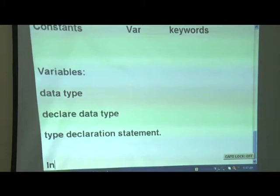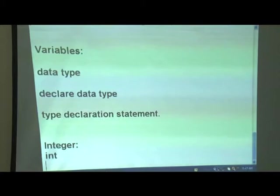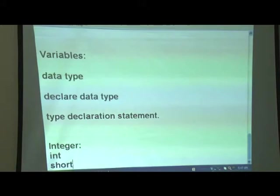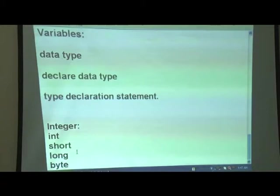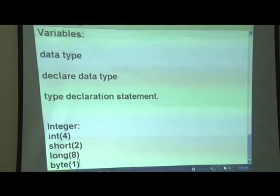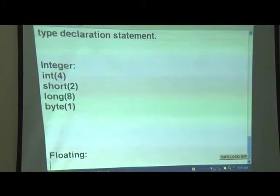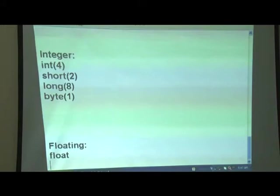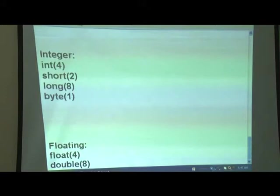The different data types in Java are: integer types — int (4 bytes), short (2 bytes), long (8 bytes), and byte (1 byte). Then floating point types — float (4 bytes) and double (8 bytes). In Java, every floating point value is of type double by default, so you must append 'f' when declaring a float, for example: 32.5f.